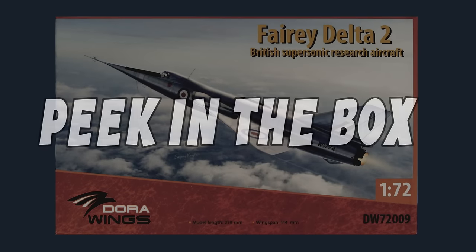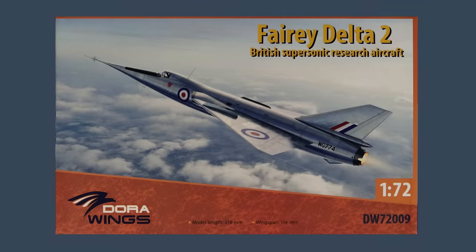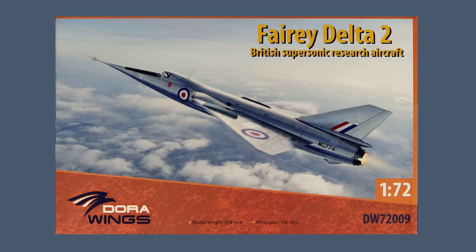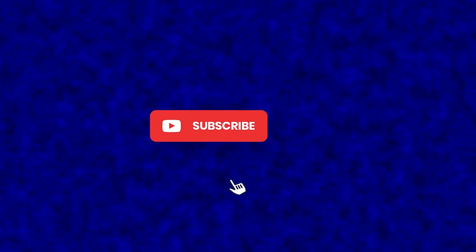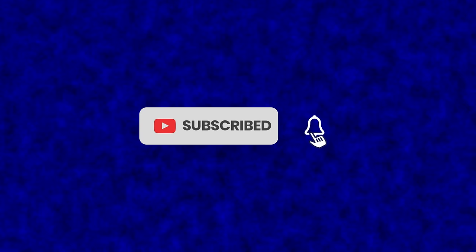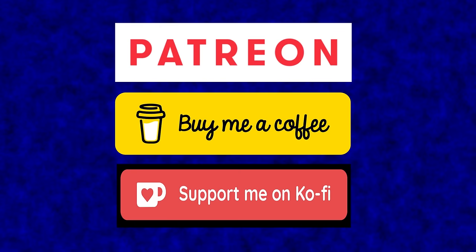Hi, I'm Gary and welcome to this peek in the box of the brand new Fairey Delta 2 in 1/72nd scale from Dora Wings. This kit was sent to me by Dane Stewart and he purchased it from the Model Workshop. If you like the video, you can support the channel for free by giving it a thumbs up on the like button and by subscribing to the channel. Make sure to hit the bell to be notified of all my future content. Links to other ways to support the channel are in the information box below.